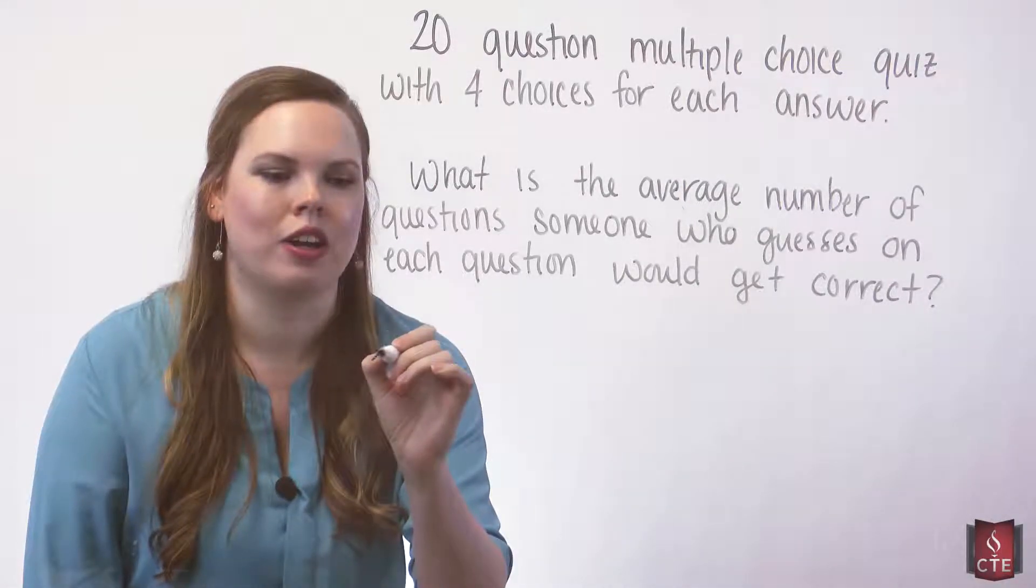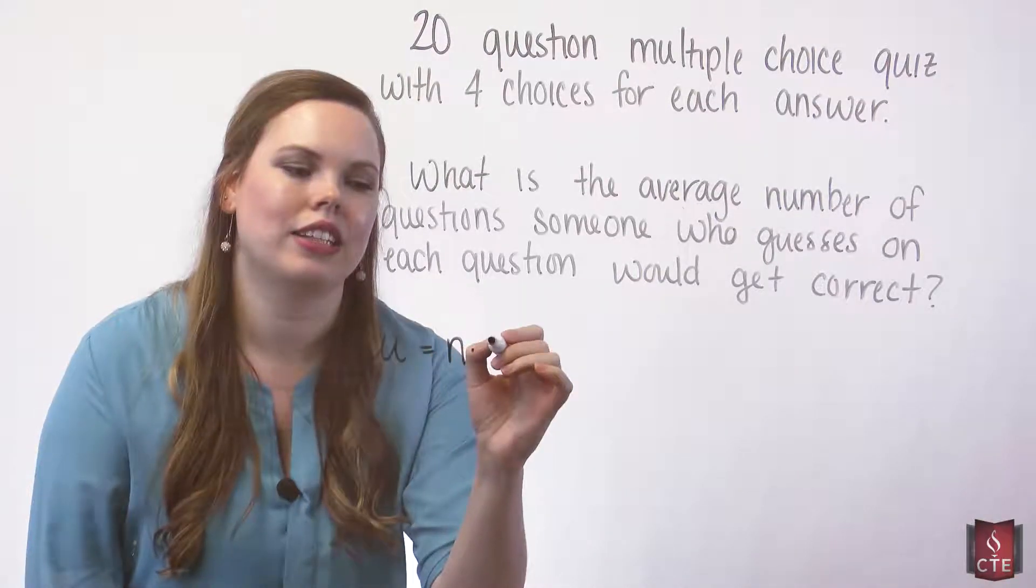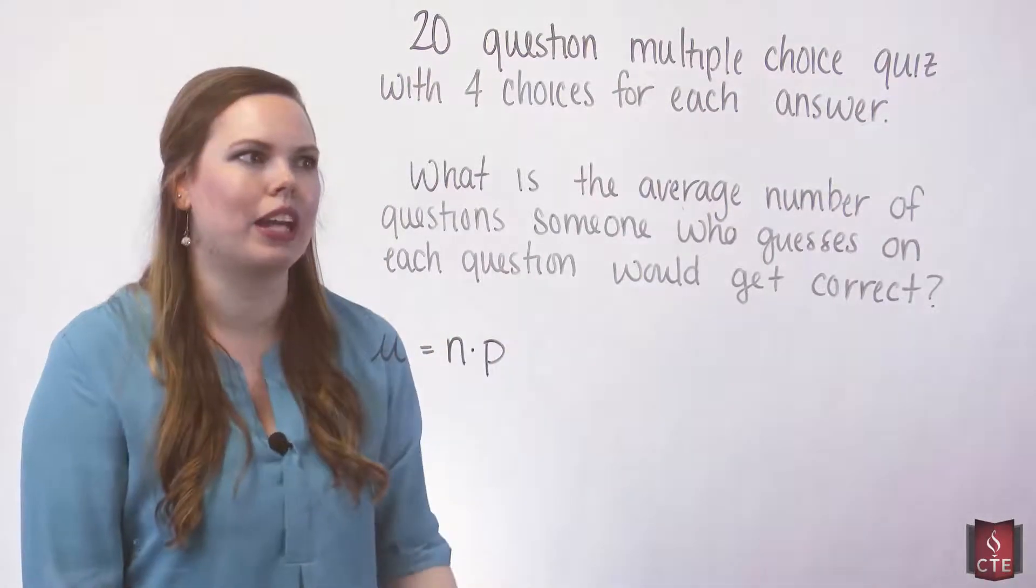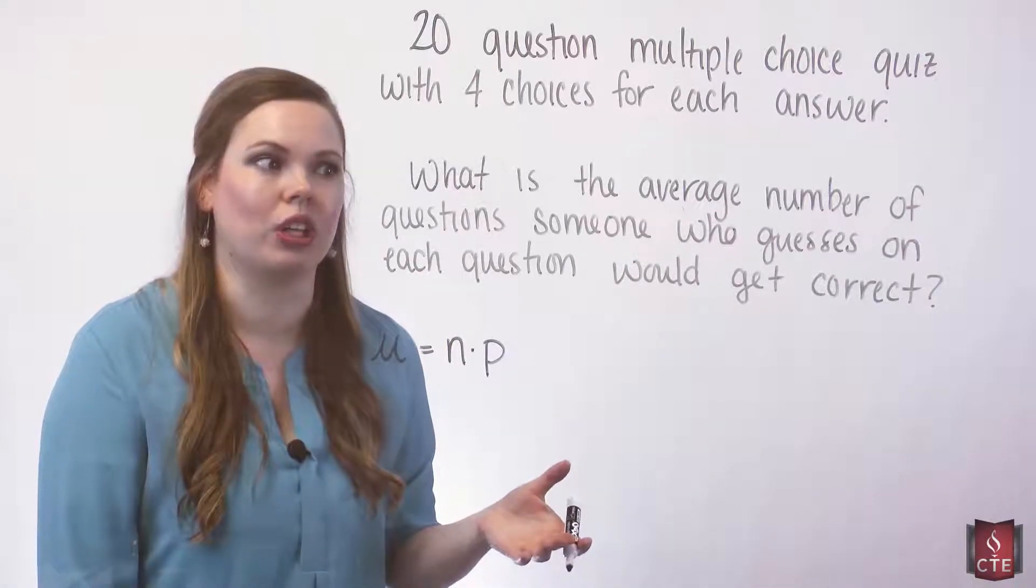The average of a binomial, the mean of a binomial, is just simply n times p. And here we're being asked for the average number of questions that someone who guesses on every question would get correct.